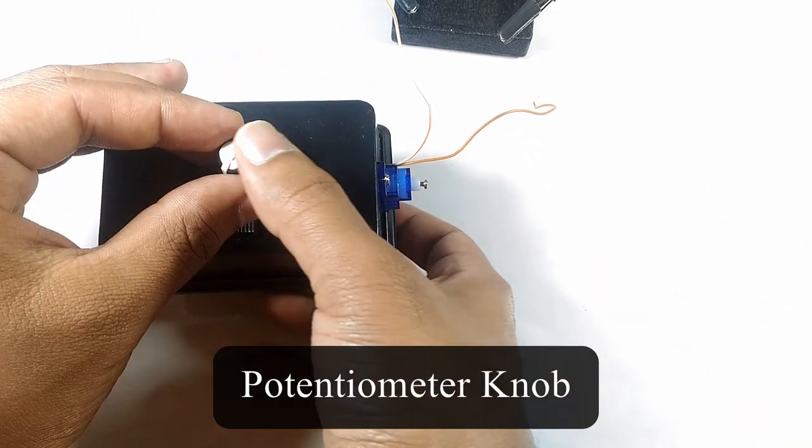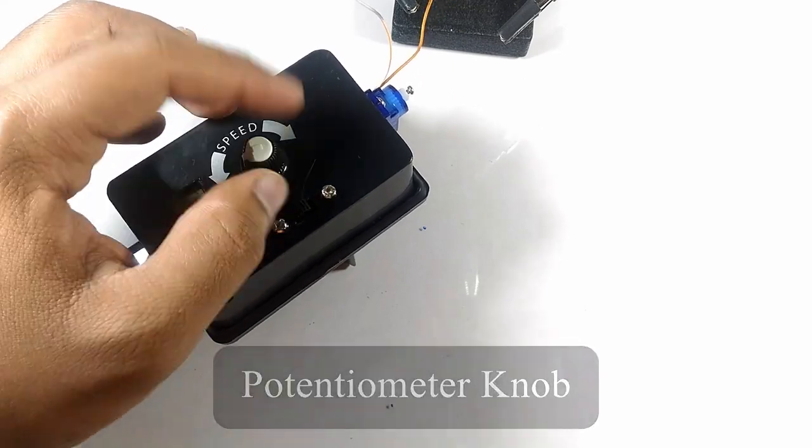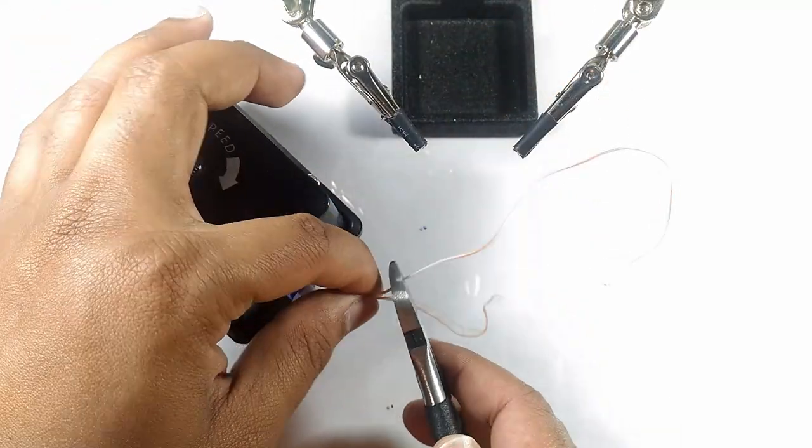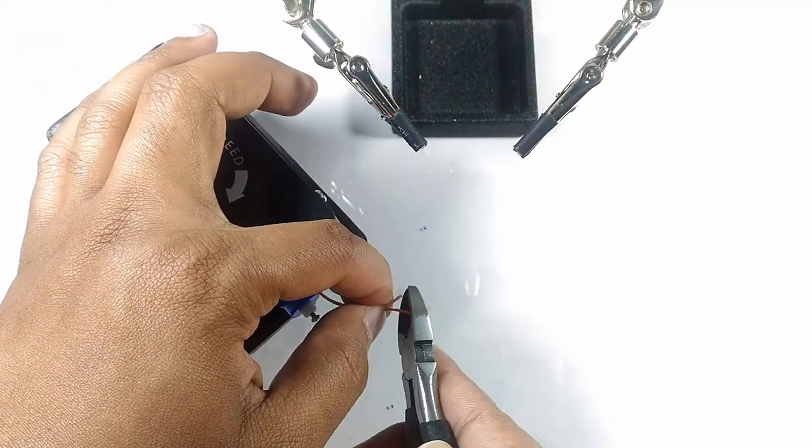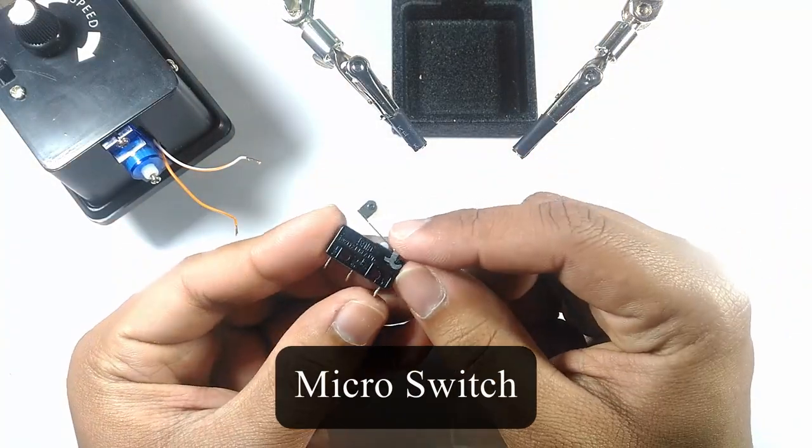I placed a knob on the potentiometer so it's easier to adjust it. I trimmed the wires for the micro switch and soldered it to the normally closed contacts.